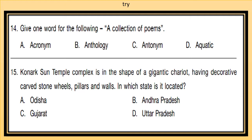Question 15: The Konark Sun Temple complex is in the shape of a gigantic chariot having decorative carved stone wheels, pillars, and walls. In which state is it located? Identify the state where the Konark Sun Temple is situated.